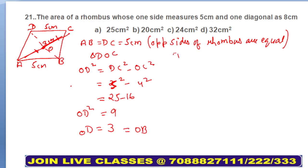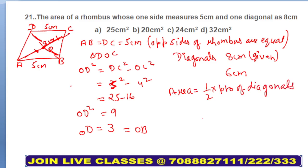So this is 3. Your diagonals are: one is 8 centimeters which is given, and another one is 6 centimeters which you just calculated. This is 3 and this is 3, so it makes 6 centimeters. You need to calculate the area. Area of rhombus is half product of diagonals. Half product of diagonals: one diagonal is 8 and another one is 6. 2×6 is 12, 4×6 is 24 centimeter square will be your answer. Option C.